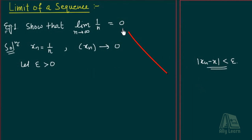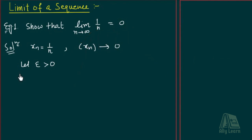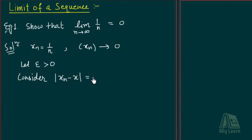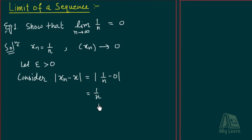Yianni, x ka value 0 hai aur xn hai 1/n. So consider mod xn minus x, that is |1/n minus 0|. Now this equals to 1/n minus 0, which is 1/n, aur iska modulus kya hoga? 1/n. Ab yeh hamne kya karna hai — we have to make this less than epsilon.